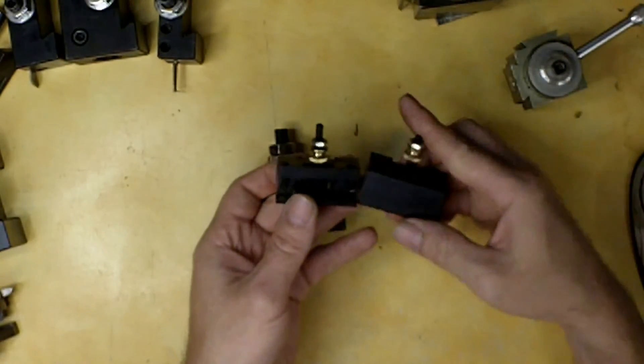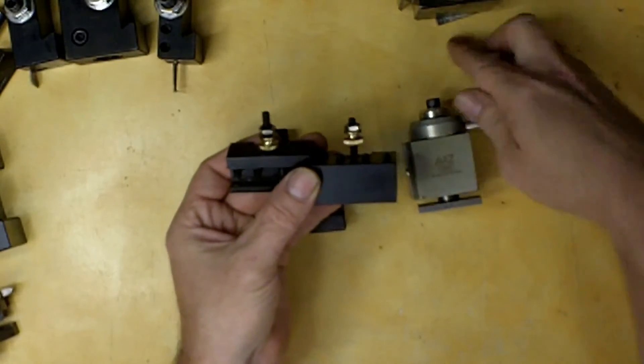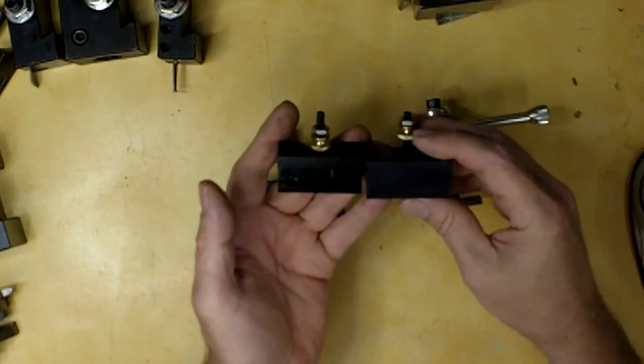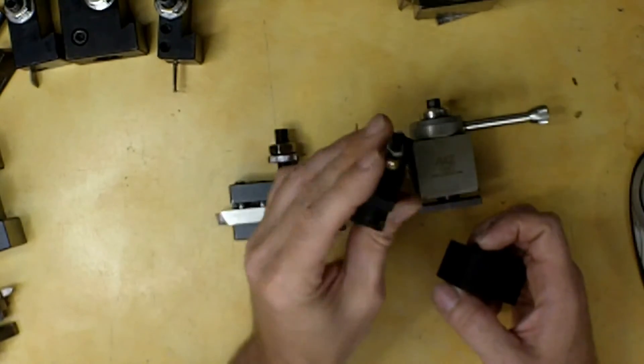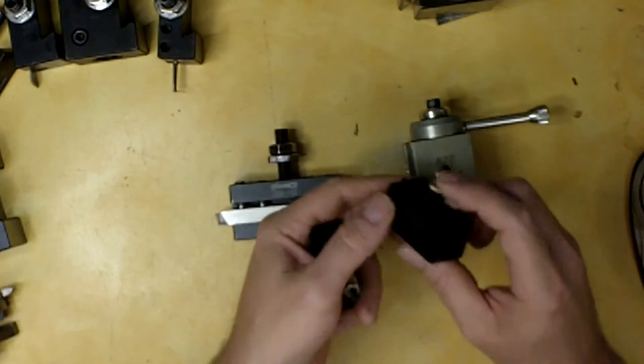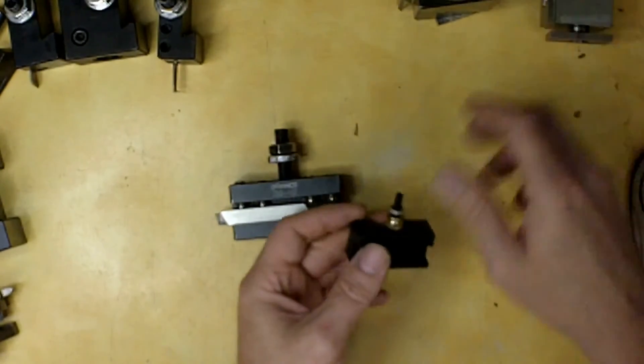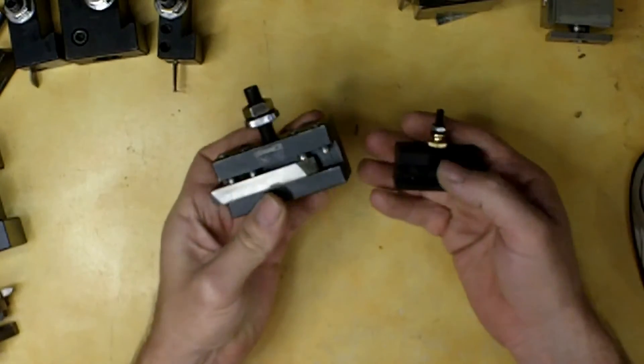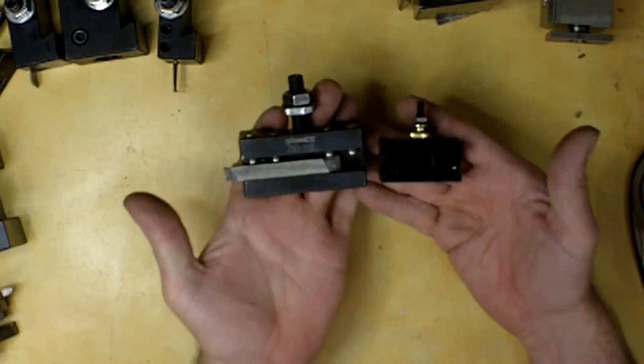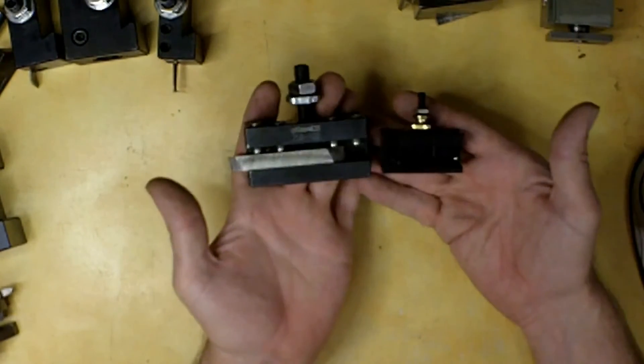Here's two tool holders for the small tool post I showed you, for the little A to Z. That's just a standard tool holder, which holds your bits. And this one would actually be a little boring bar holder here. And just to get a little bit of a scale, in between these two sizes of lathes, between six and nine, that's what you get.